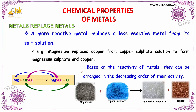Now let us see about the chemical property of a metal where there is the perspective of replacing a metal with a metal. A more reactive metal replaces a less reactive metal from its salt solution. The example taken is magnesium. Magnesium replaces copper from copper sulfate solution to form magnesium sulfate and copper. Magnesium is the more reactive one when compared to copper. Based on the reactivity of metals, they can be arranged in the decreasing order of their reactivity.